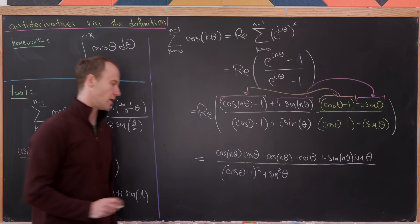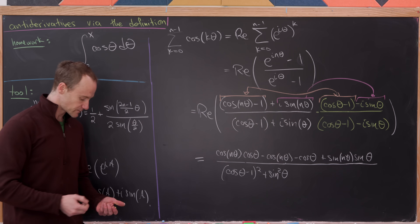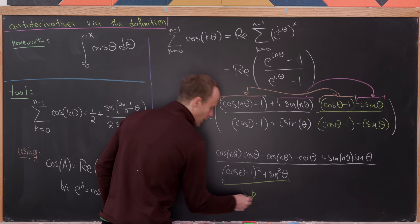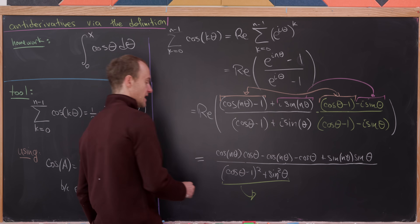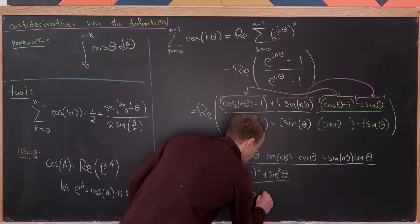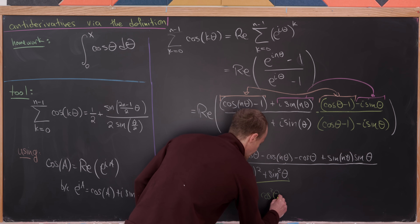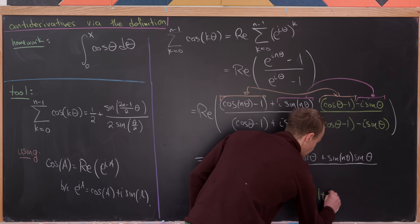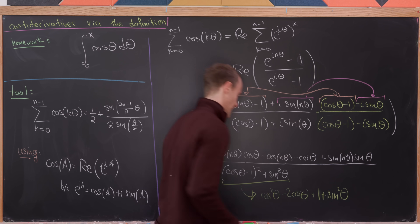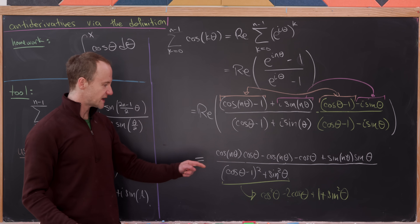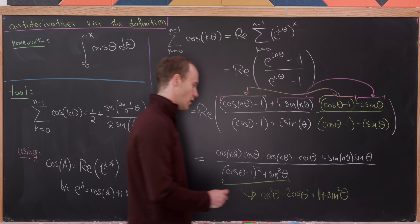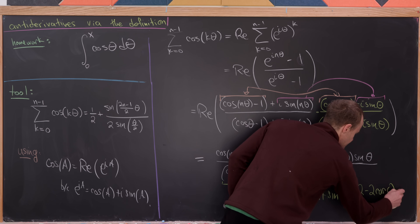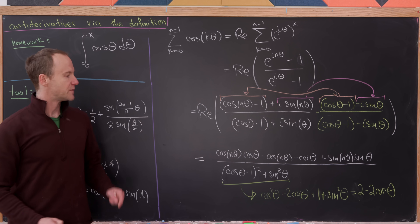Now let's multiply out the denominator: we get cos²θ − 2cos θ + 1 + sin²θ. The cos²θ and sin²θ add up to one, leaving us with 2 − 2cos θ.